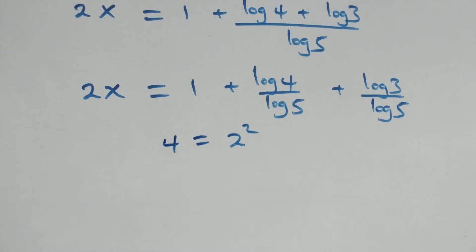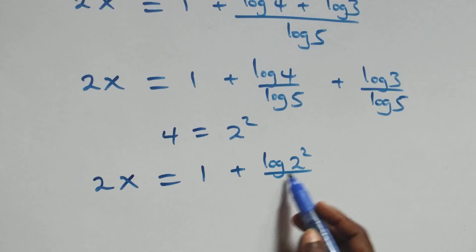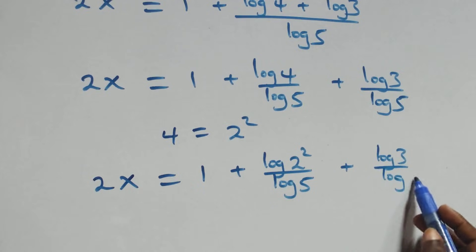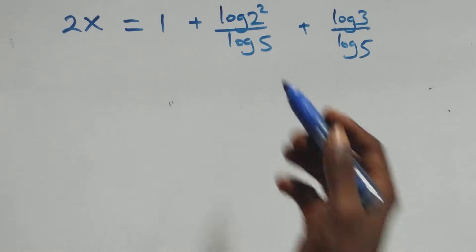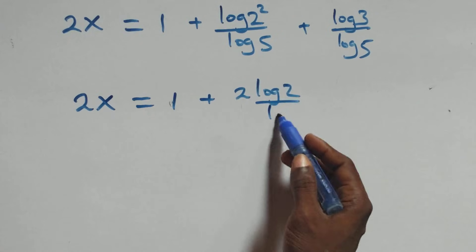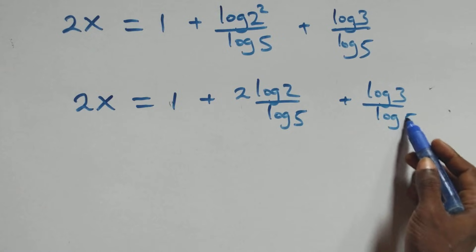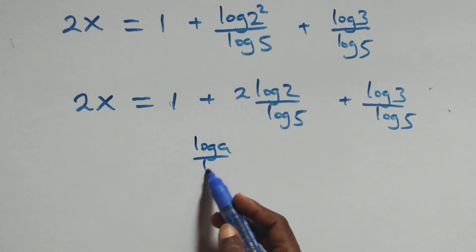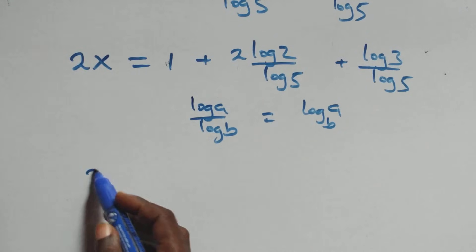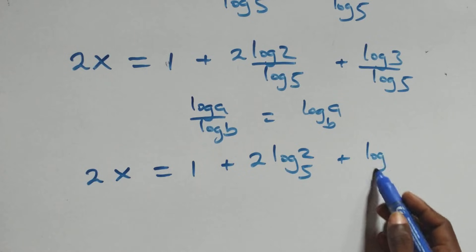Also, 4 can be expressed as 2 times 2, or 2 squared. And what we have becomes 2x equals to 1 plus log(2 squared) over log 5 plus log 3 over log 5. Then we apply the change of base formula: when we have log a over log b, this gives log base b of a. Here we have 2x equals to 1 plus 2·log₅2 plus log₅3.